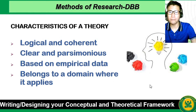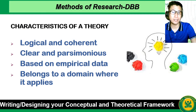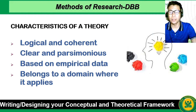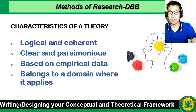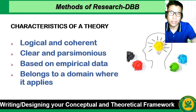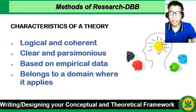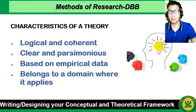What are the characteristics of a theory? It should be logical and coherent — meaning the reasonableness of the theory you have identified, whether it's really related or relevant to your research. You should be able to justify why you have chosen that theory. It should also be parsimonious — economical. And it should be based on empirical data. Empirical data is information acquired through experimentation and observation, and those empirical data are essential for the scientific process.